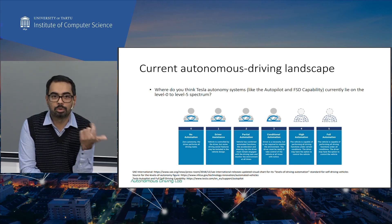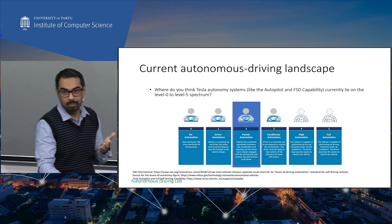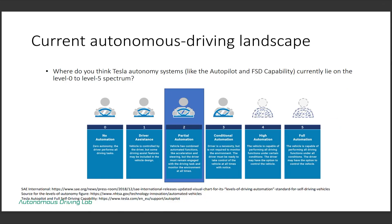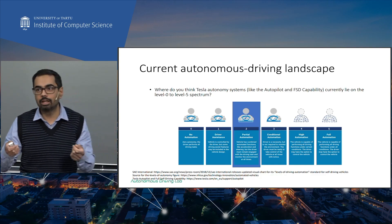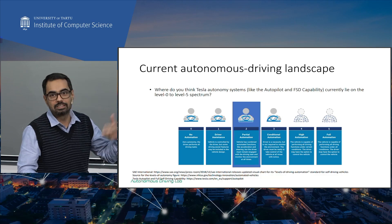The correct answer is two. These levels are cleverly set up because they also take into account liability and responsibility, not just the functionalities. Level two is where the vehicle can have a lot of automation, but the driver is still always responsible and should be willing to take over at any instant. That's where Tesla's autopilot and full self-driving capability systems currently are.